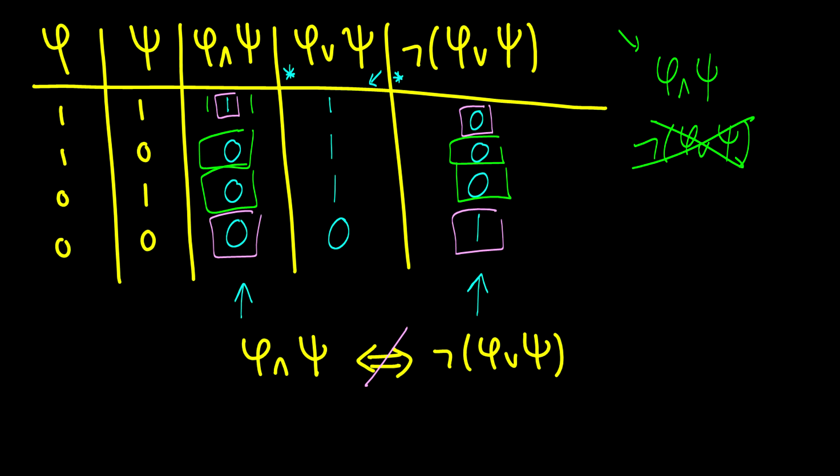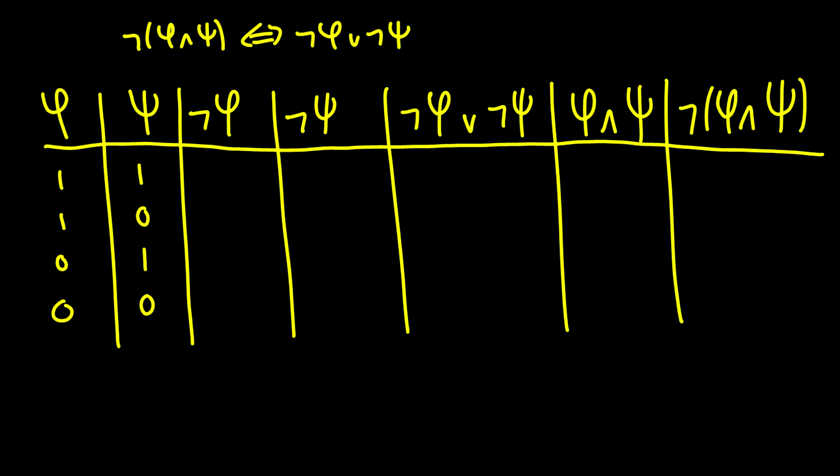Let's take a look at this one. Is ¬(φ∧ψ) the same as ¬φ∨¬ψ? Let's start filling this out. Okay, ¬φ. Well, we're just going to change the ones to zeros and the zeros to ones. In ¬ψ, we're going to do the same. So we get kind of an upside down truth table here.